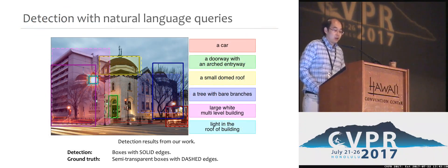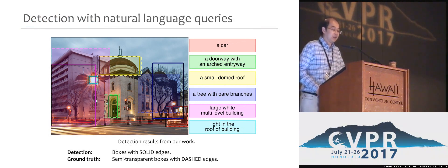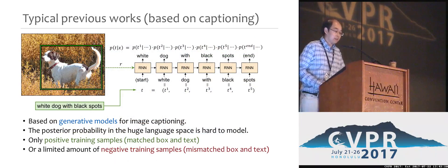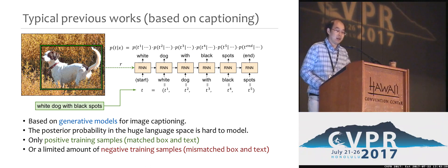We tackle the problem of detecting objects that match a text query. As shown in the figure, objects of interest can be described in a flexible and comprehensive way. Previous work in this direction typically estimated the posterior of generating the query text given a bounding box, and took it as a detection score.